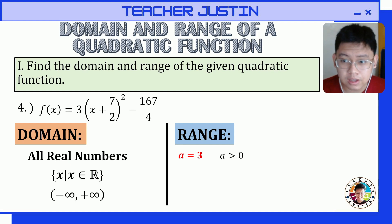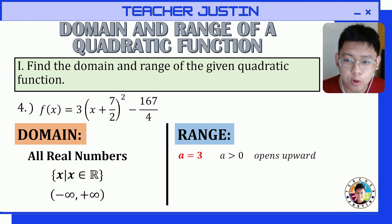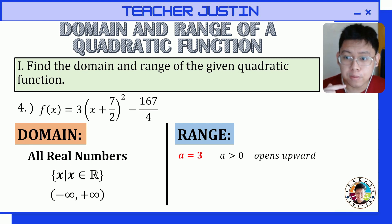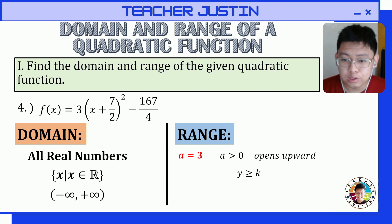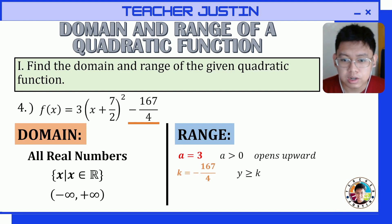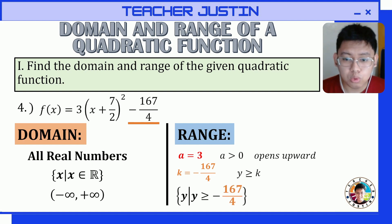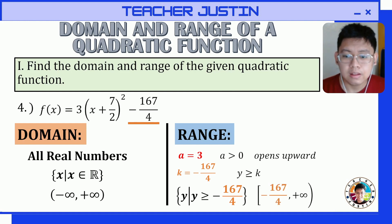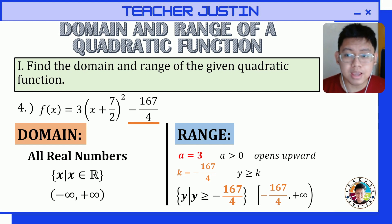We compare a to 0. Since a equals 3, it is positive and greater than 0, so the graph opens upward. The vertex is at the bottom, the minimum value, so all values of y will be greater than or equal to k. Since this is vertex form, k is equal to negative 167/4. Our range is: y such that y is greater than or equal to negative 167/4, or in interval form from negative 167/4 going to positive infinity. That is our domain and range.